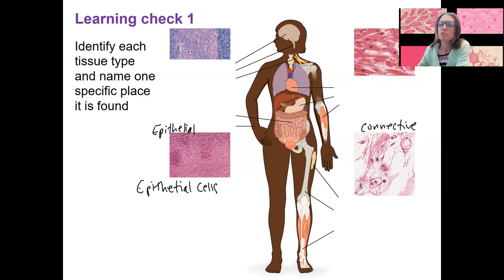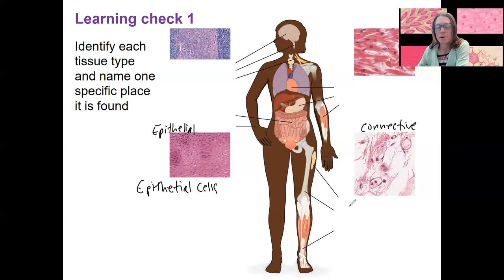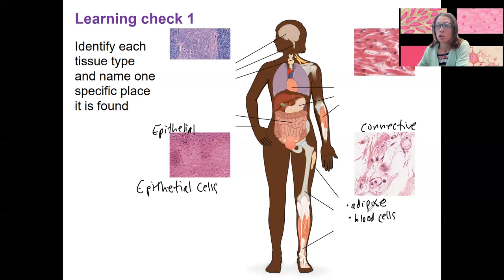Connective tissue is really variable — it's a broader category in terms of the scope of stuff that it includes, so there are a lot more types of cells in it. For example, you can have adipose cells, that's fat cells, which are one type of connective tissue cell. Blood cells are actually considered connective tissue, so white blood cells and red blood cells are two pretty different and unique types.